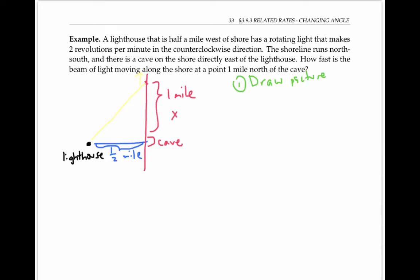Since we want to know how fast the beam of light is moving, we're going to want to know how that distance x is changing. In other words, we want to calculate dx/dt when x is one.